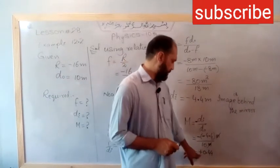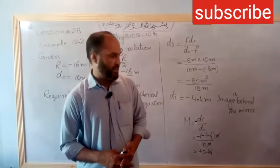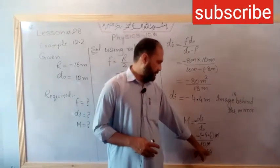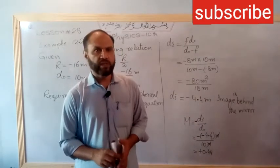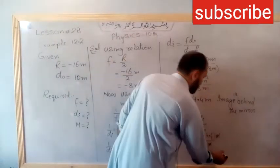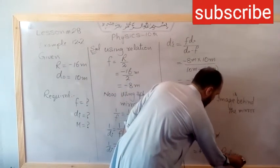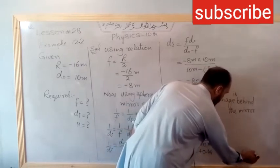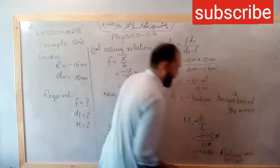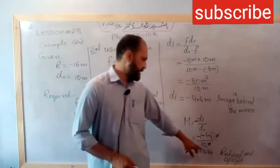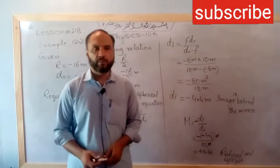0.44 - positive means the image is upright. And 0.44 means less than one, so the image is reduced. A reduced and upright image. Positive magnification means upright.